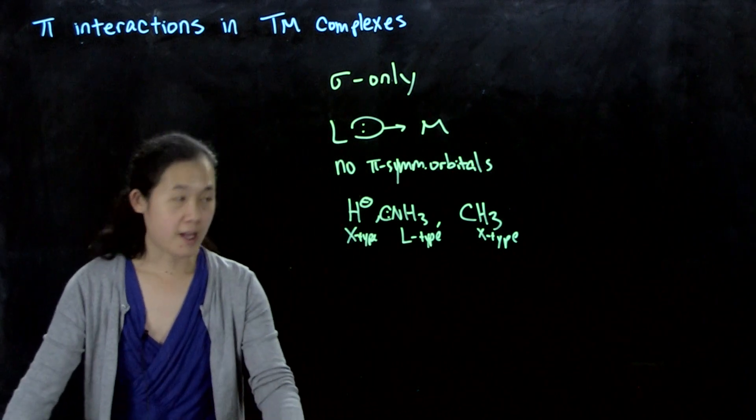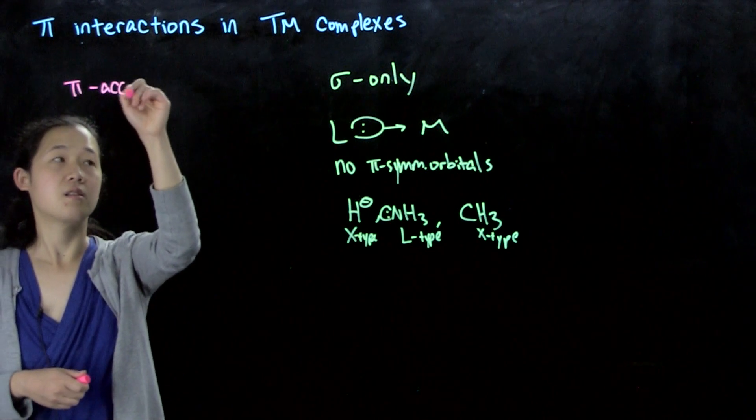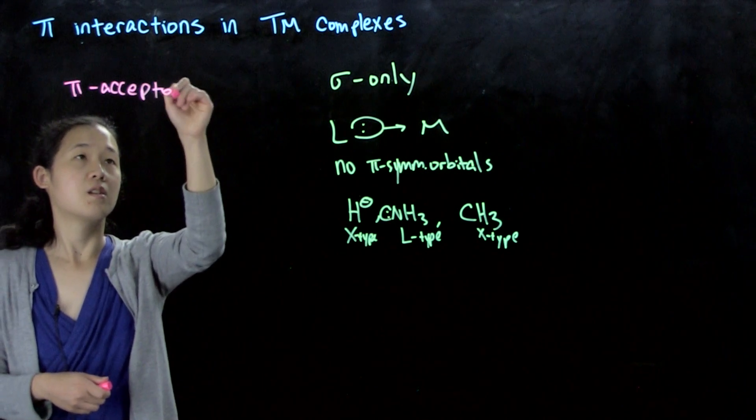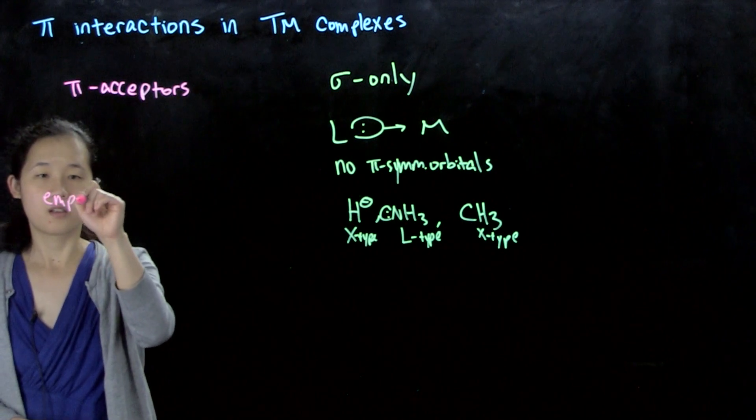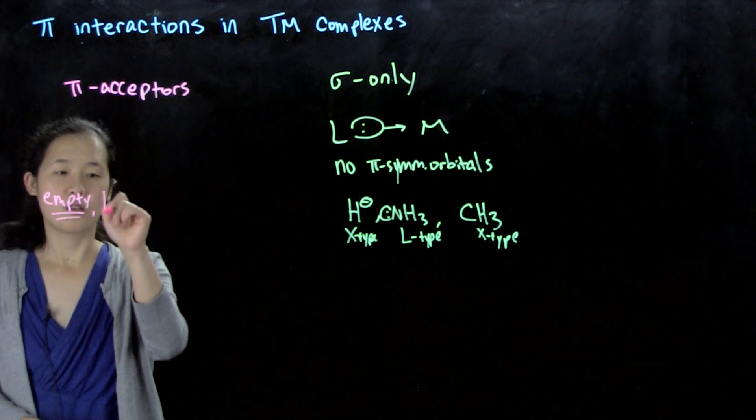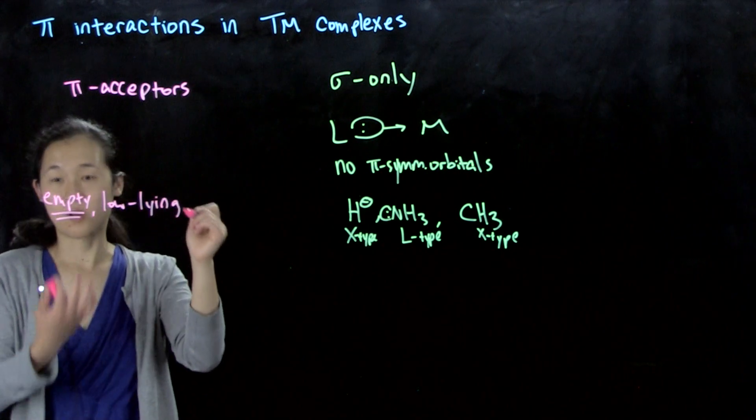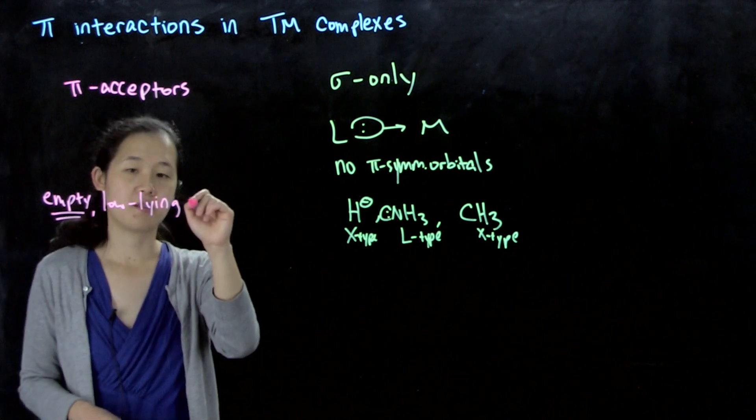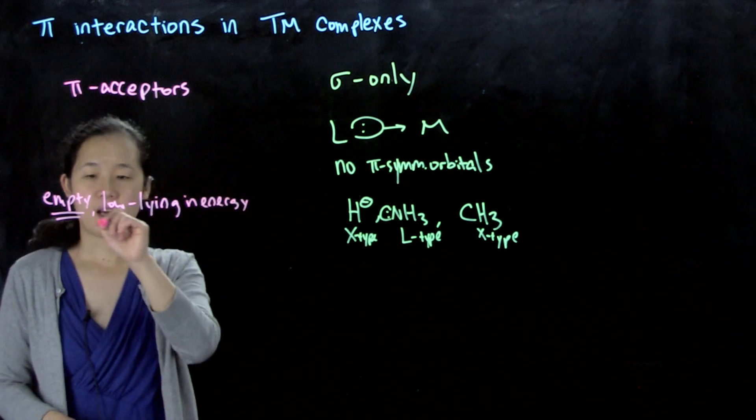We could also have pi-acceptors. Pi-acceptors are when you have empty, low-lying, low in energy, pi-symmetry orbitals.